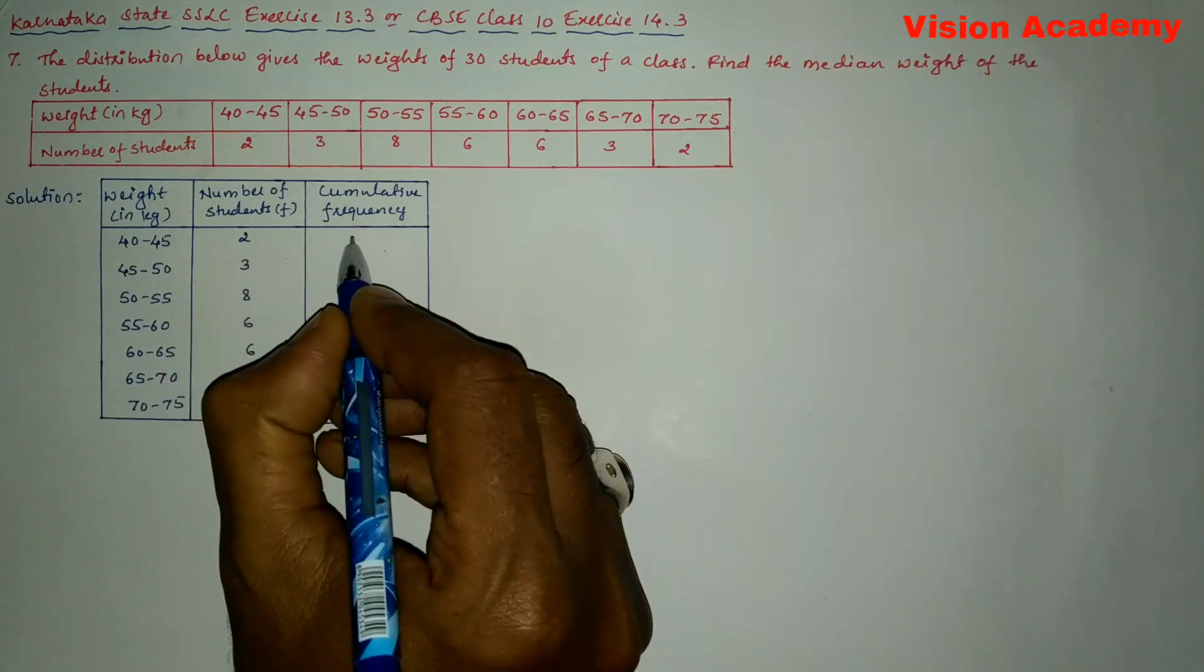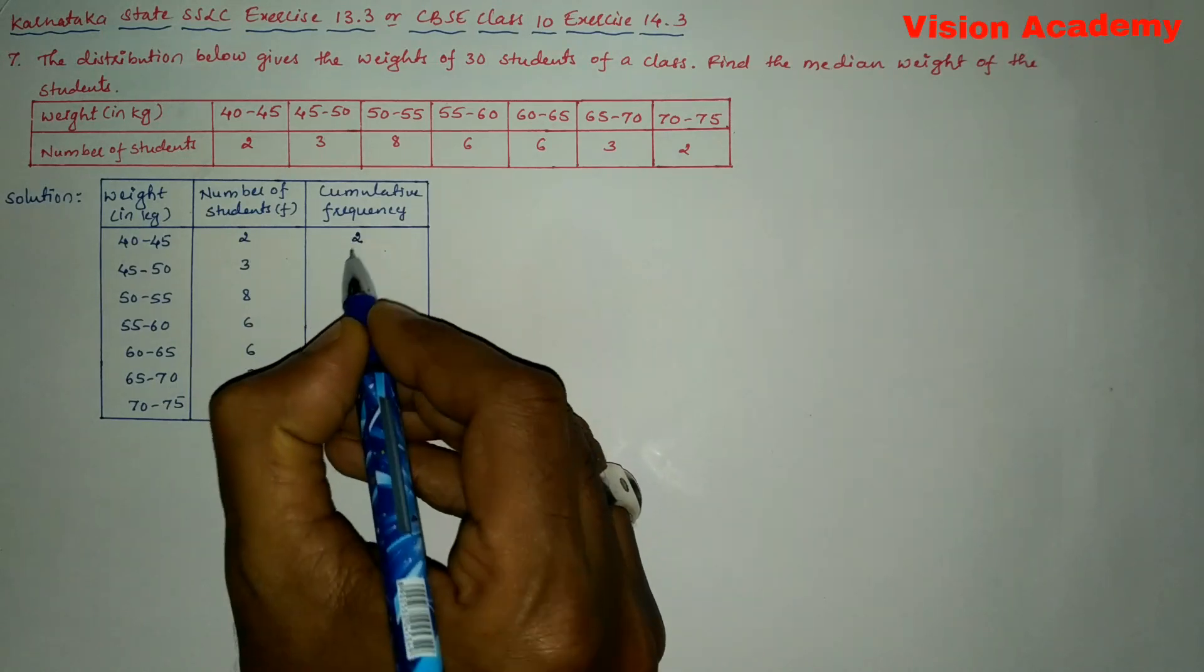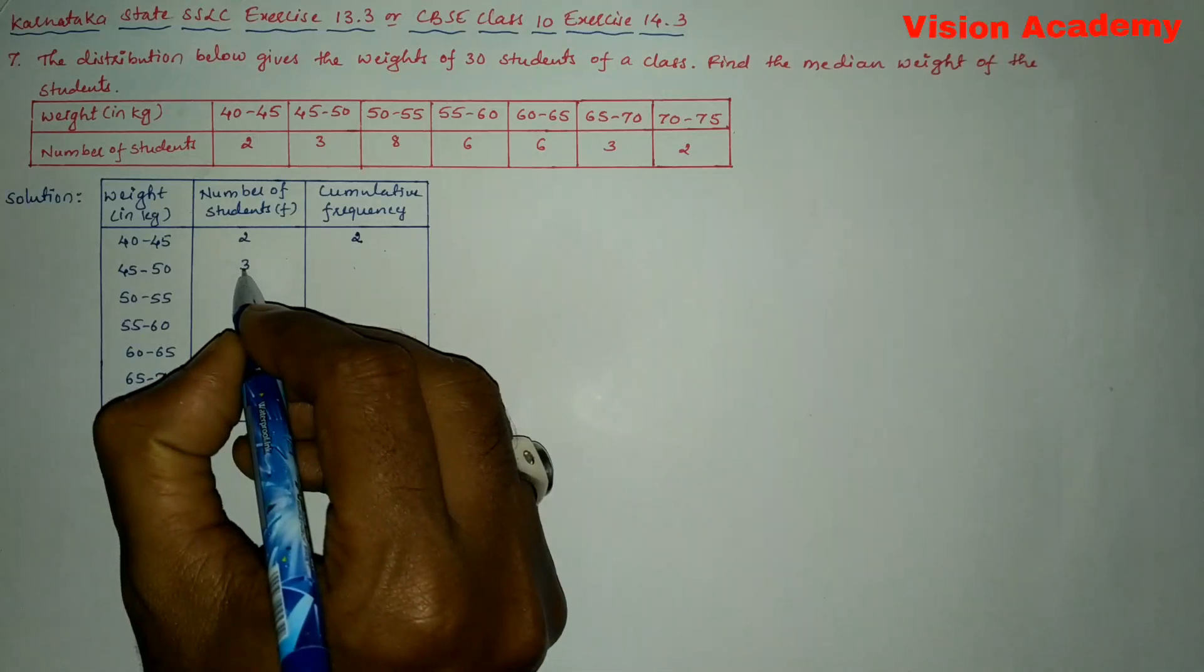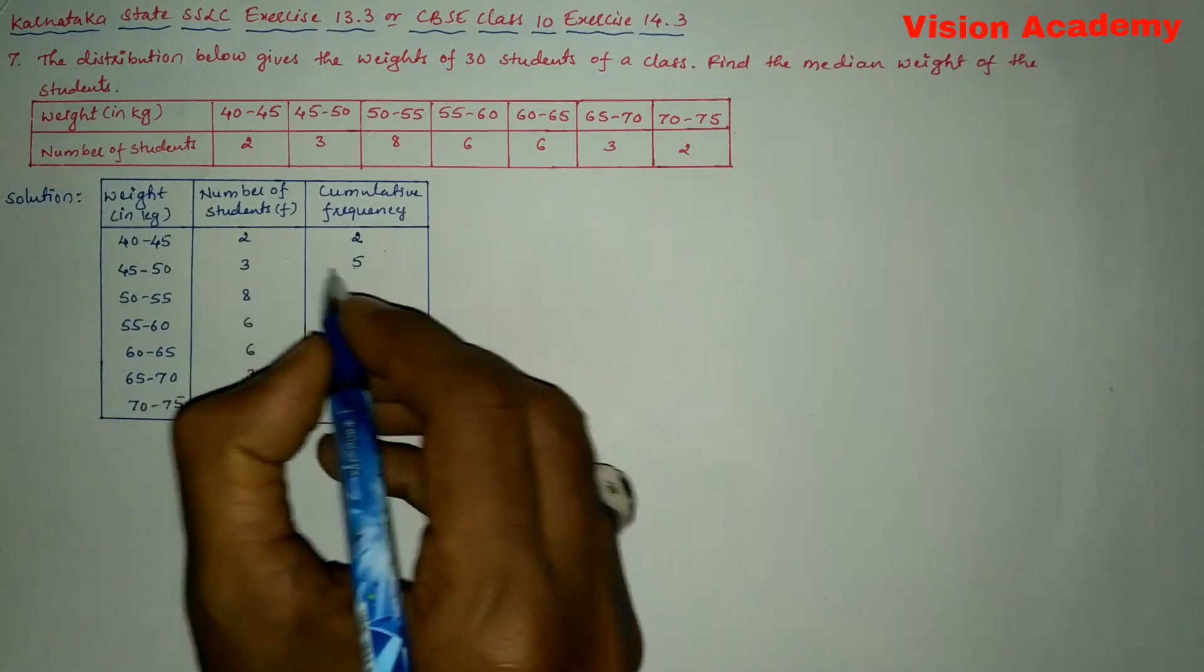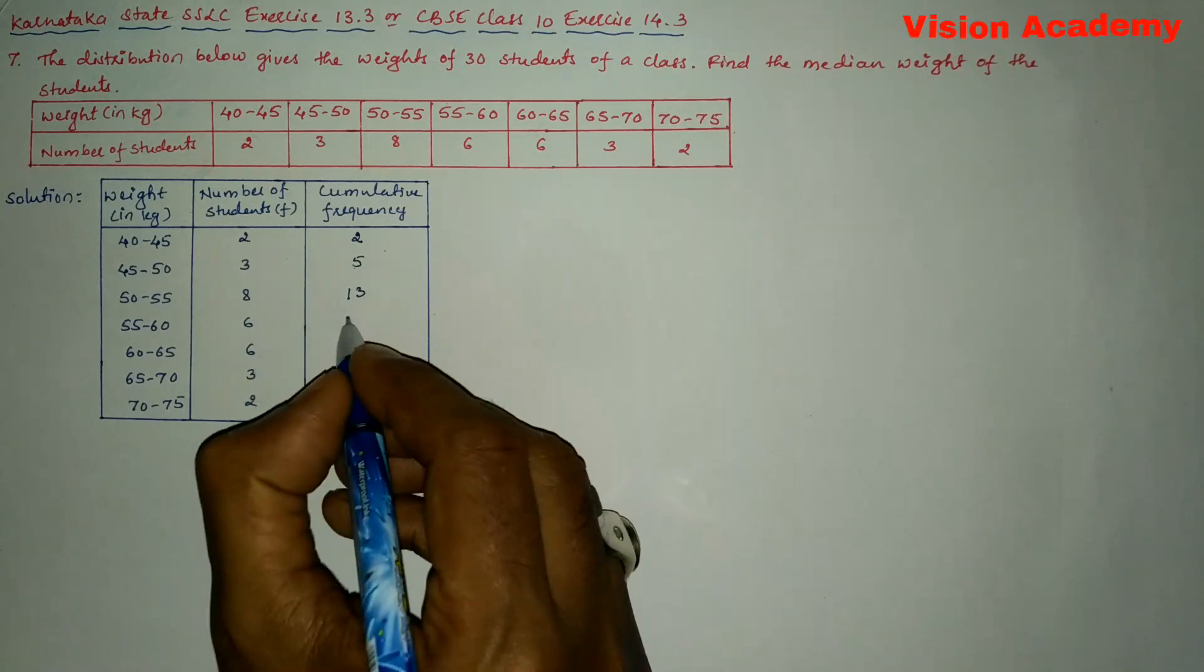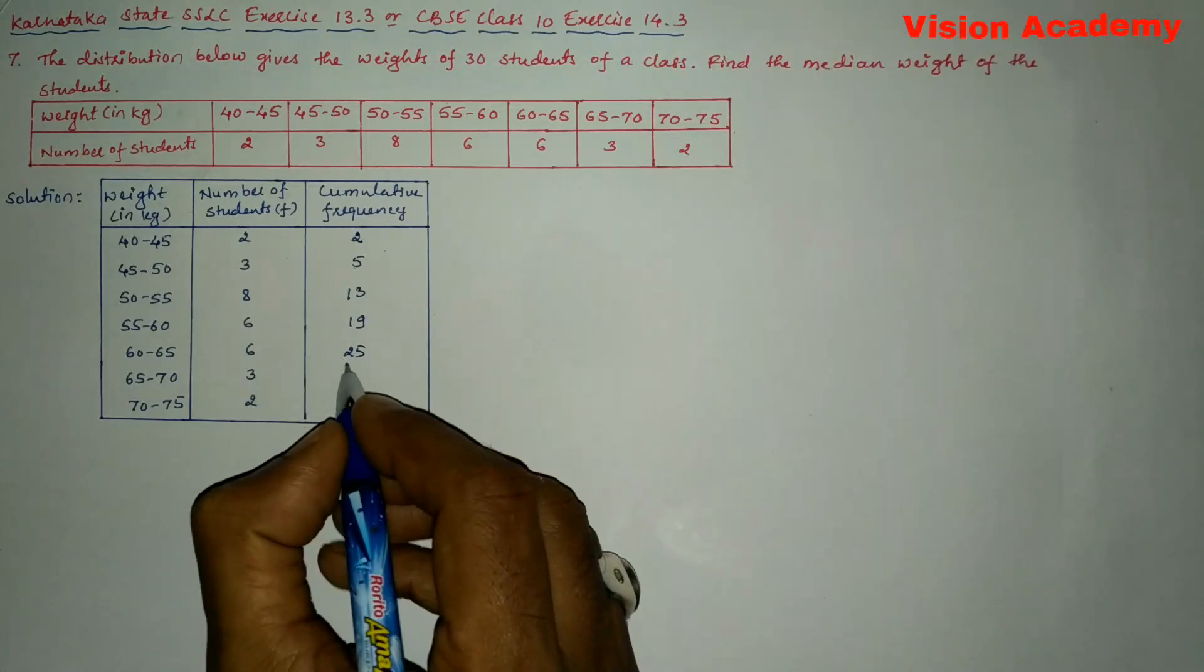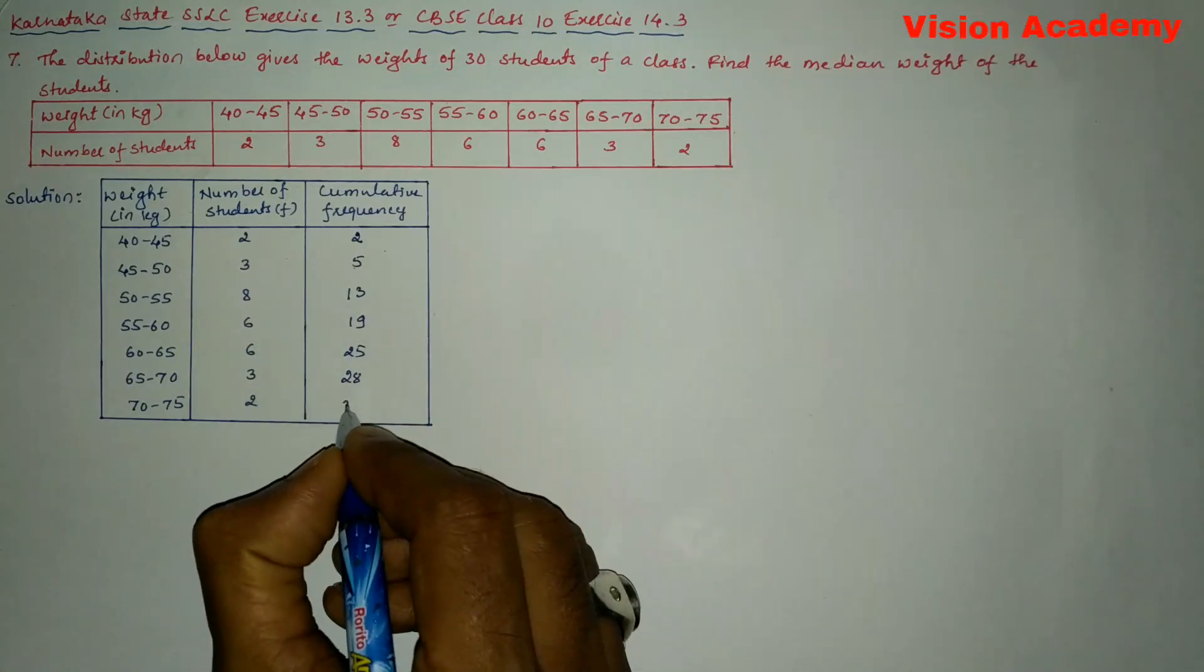First the number of students, the first frequency, is written as it is. Now this 2 is to be added to the next frequency: 2 plus 3 gives us 5, 5 plus 8 gives us 13, 13 plus 6 gives us 19, 19 plus 6 gives us 25, 25 plus 3 gives us 28, 28 plus 2 gives us 30.